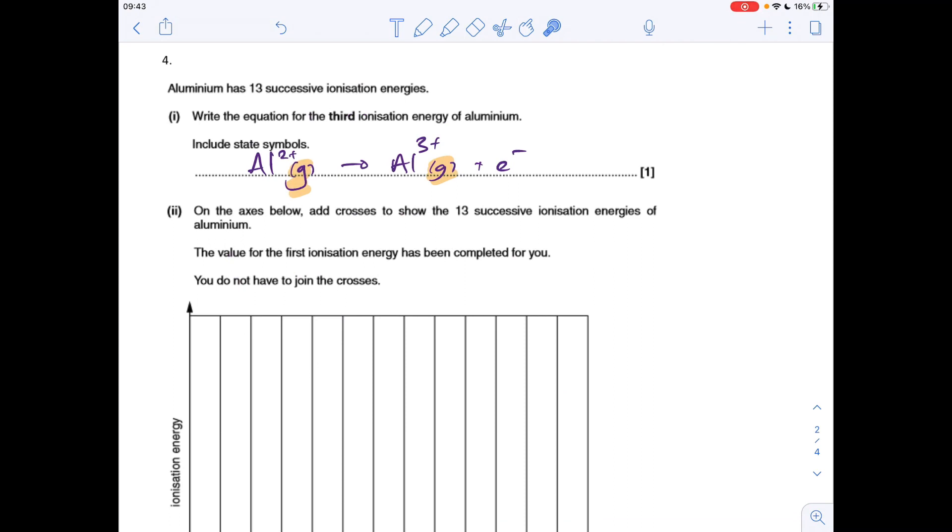Question four now. So the third ionisation energy of aluminium is represented like that. That's going from the two plus gaseous, don't forget the state symbol, two plus gaseous ion to the three plus gaseous ion. You're not removing all three electrons at once. Remember, it's done stepwise.